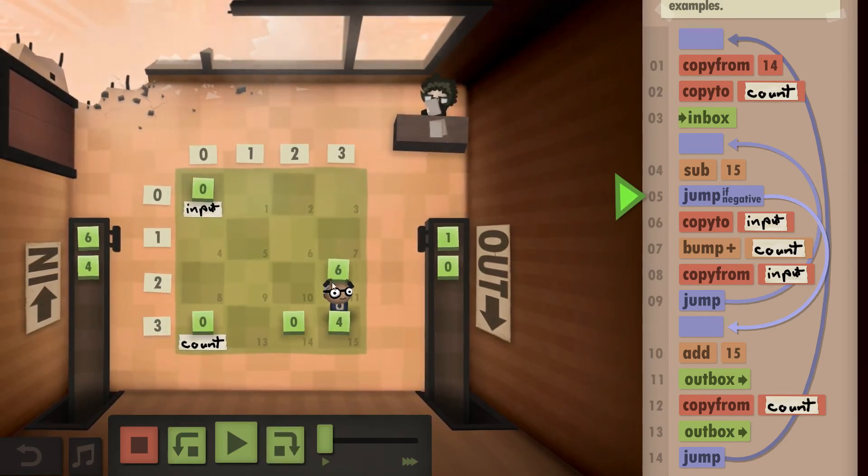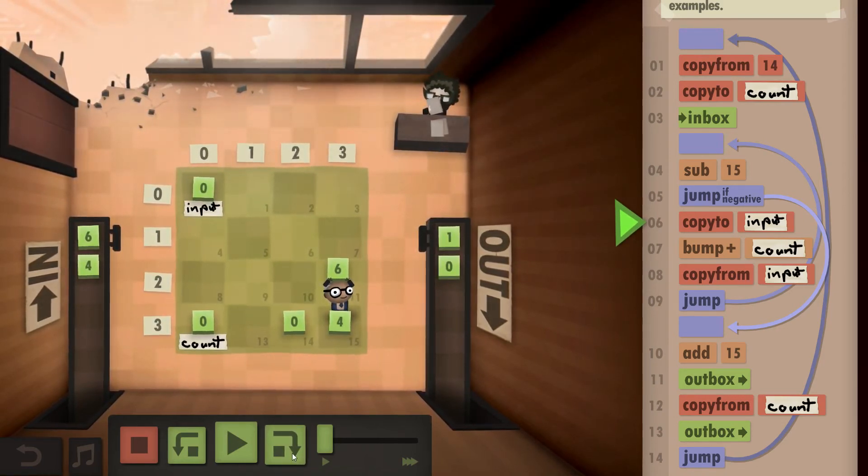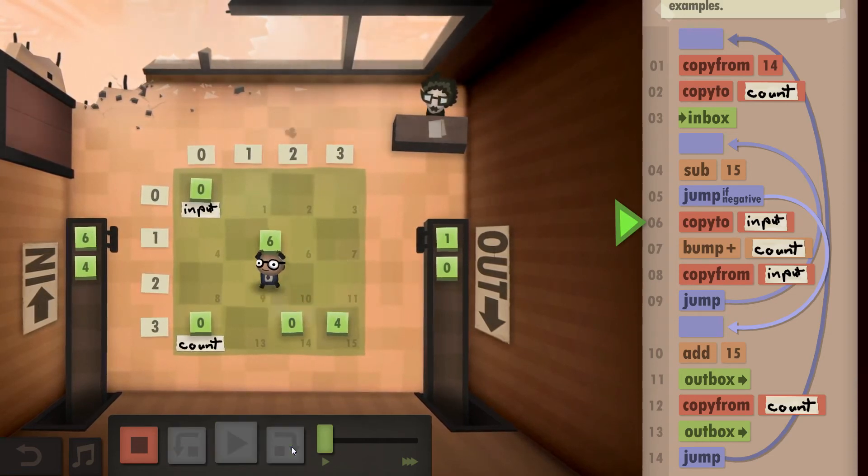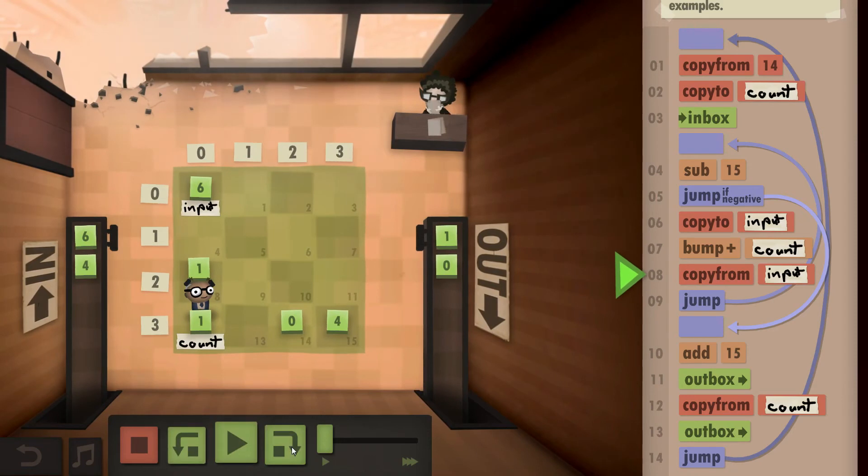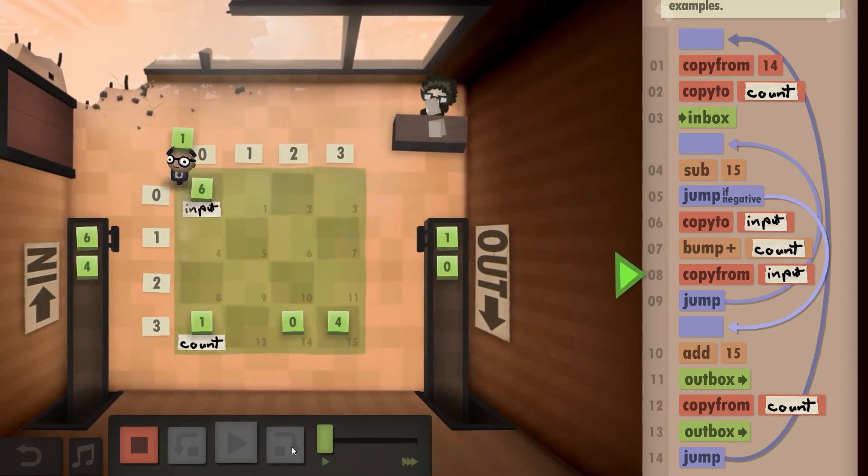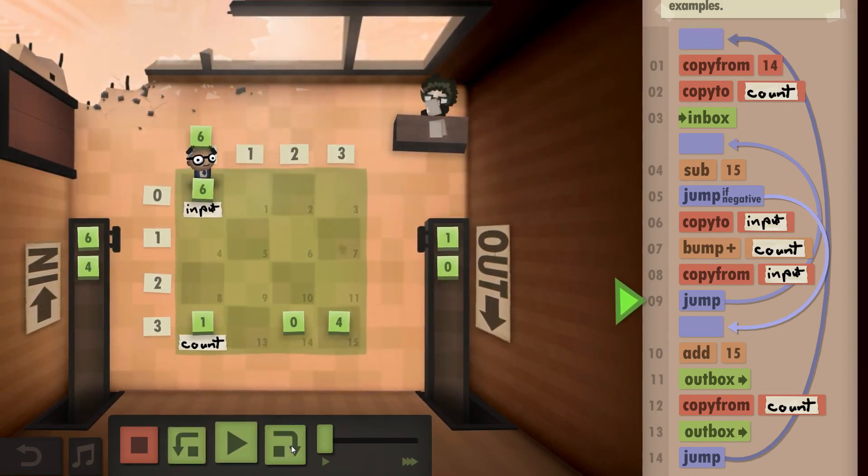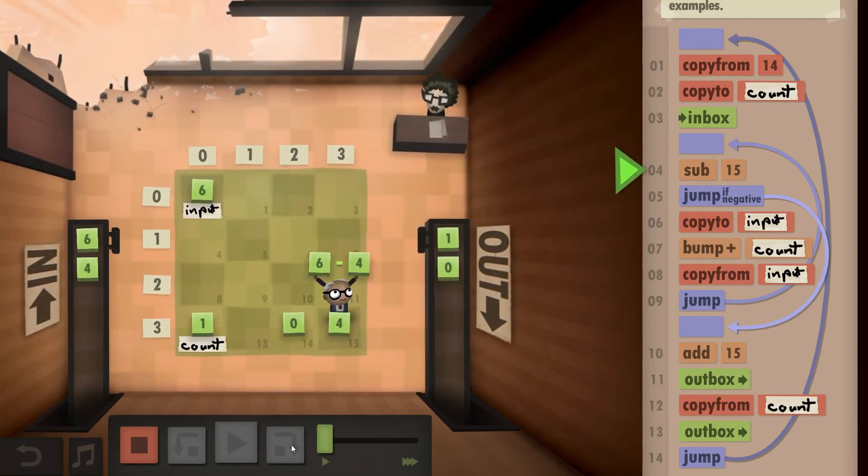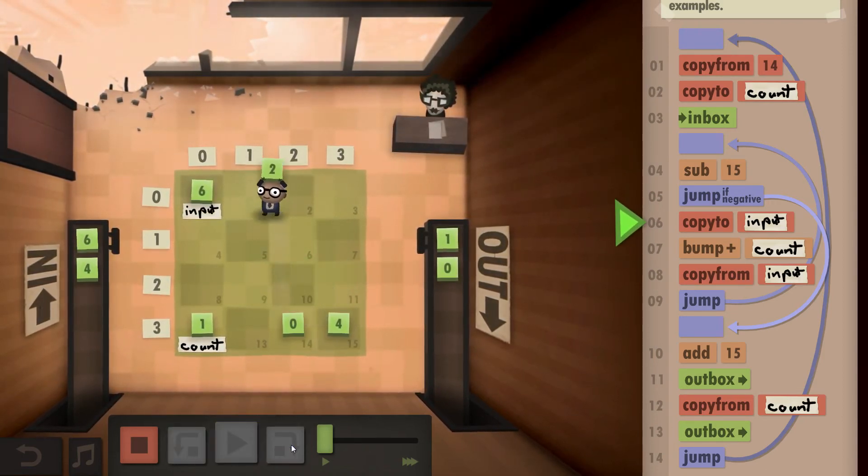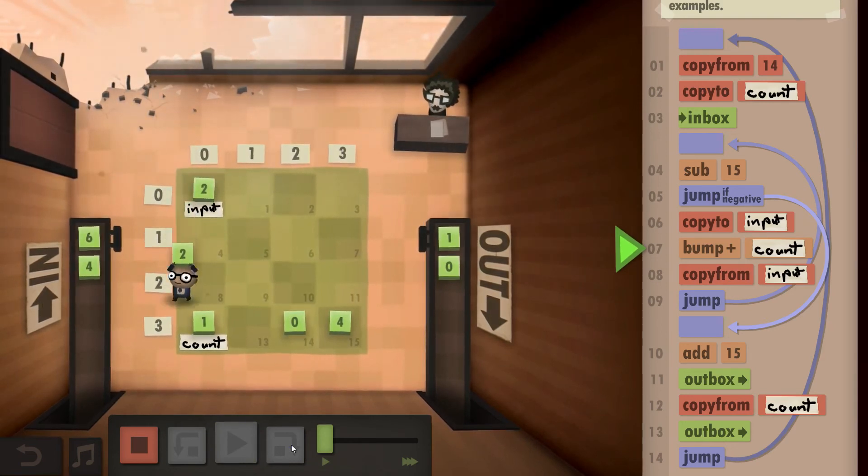So we subtract the 4, we get a 6, which is not negative, so we copy this to our input field and bump up our count. We copy from the input, subtract the 4 again. Again, not hitting a negative, so copying that back to the input. Bump up our count again.